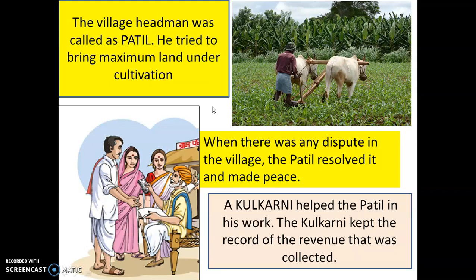The Patil was helped in his work by a Kulkarni. The Kulkarni kept a record of the revenue that was collected. Just as we pay taxes today, people in those days also had to pay taxes — sometimes in the form of cash and sometimes in the form of grain. All the records of the revenue collected were maintained by the Kulkarni.